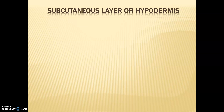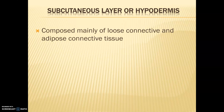Our last layer is the subcutaneous layer, also called the hypodermis. This is the lowest part of our skin or integumentary system, and it's composed mainly of loose connective tissue and adipose connective tissue — this is where that storage, cushioning, and insulation layer comes into play. We're going to stop here for now, and we'll talk more about what's specifically found in these different layers. If you have any questions, make sure you reach out.